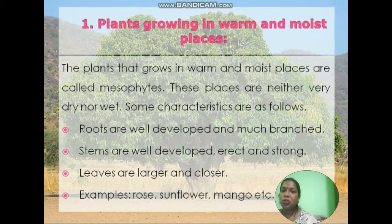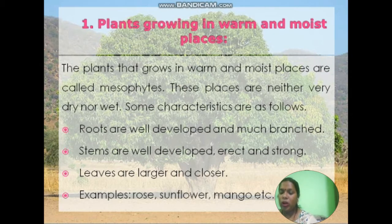Plants that grow in warm and moist places are called mesophytes. These places are neither very dry nor very wet. Some characteristics are as follows: roots are well developed and much branched.